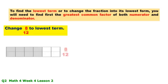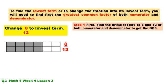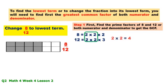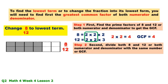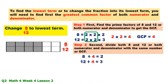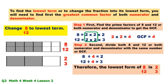Change 8/12 to lowest term. Step 1: Find the prime factors of 8 and 12 to get the GCF. 8 = 2 × 2 × 2 and 12 = 2 × 2 × 3, so the GCF is 4. Divide: 8 ÷ 4 = 2 and 12 ÷ 4 = 3. Therefore, the lowest term or lowest form of 8/12 is two-thirds.